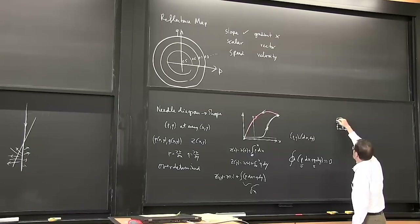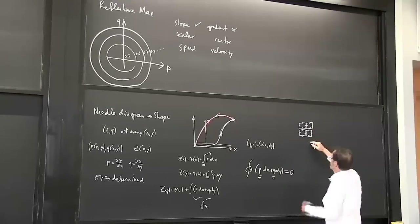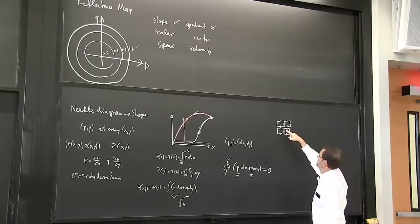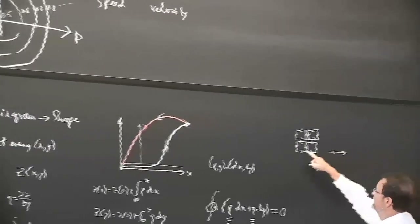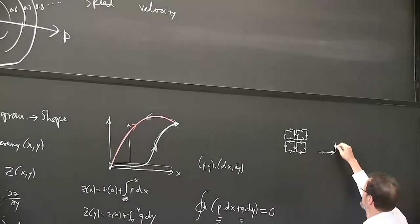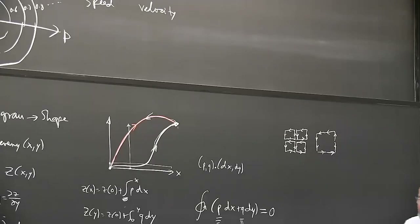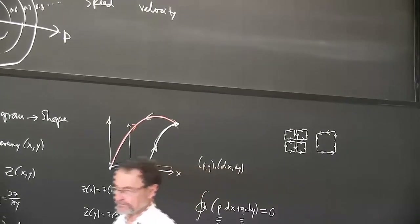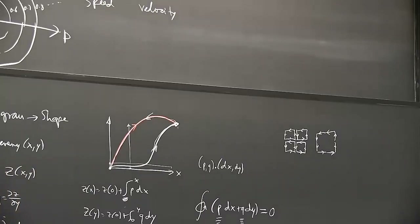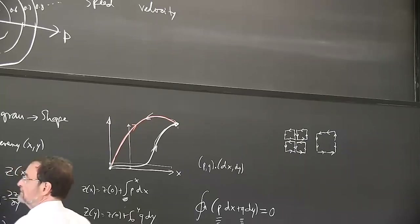I can decompose a large loop into small loops - if it's true for a small loop, I can put another loop next to it and another loop. Rather than go around these four loops, I can eliminate the inner parts because they cancel each other. So this is a crude way of proving that if it's true for any small loop, I can decompose any large loop into lots of small loops, and then it's going to be true for the large loop as well.